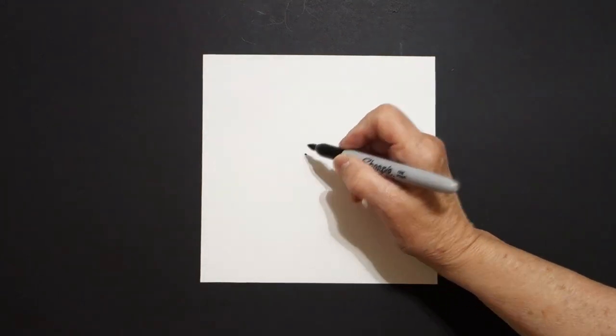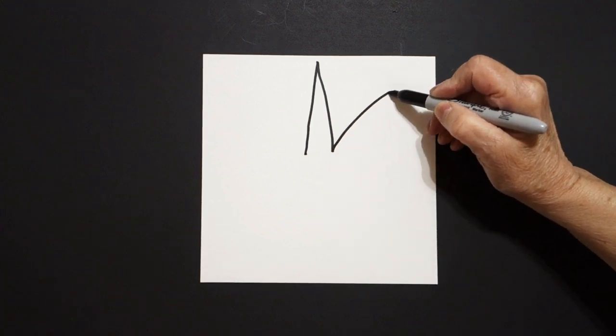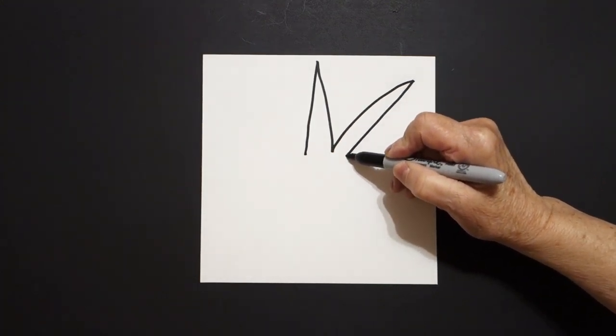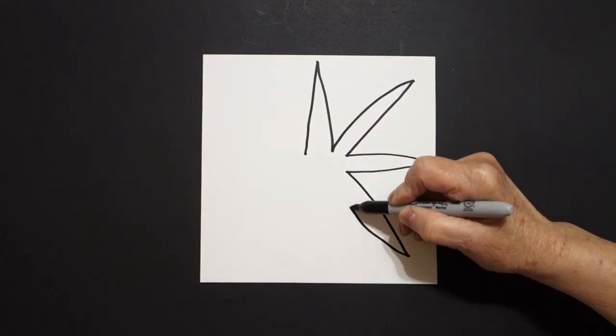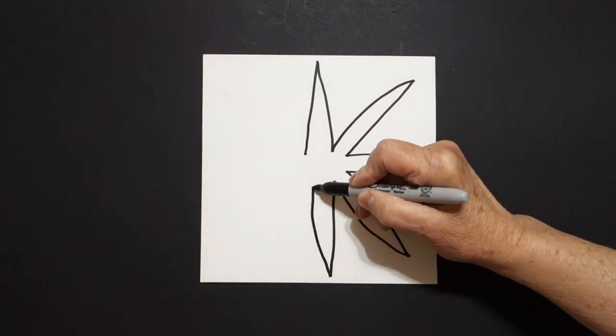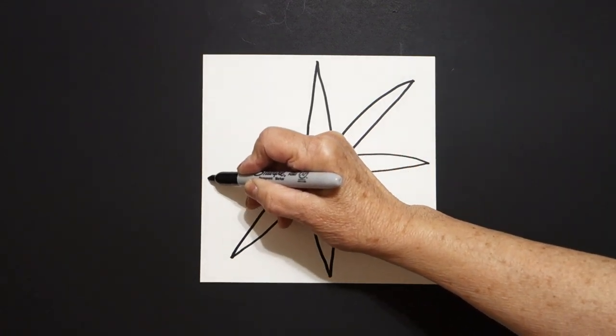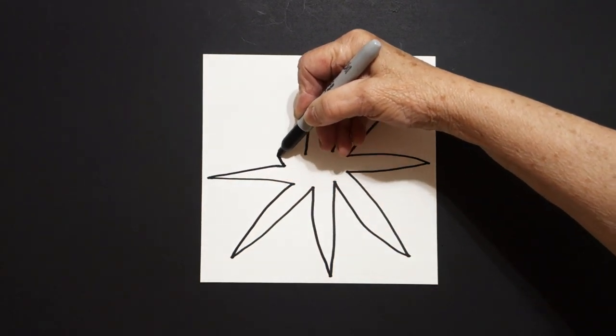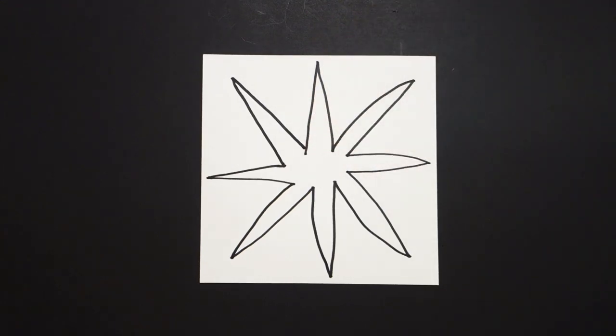I'm going to come right here in the middle of my paper and put a dot. I'm going to go straight line up, straight line down, straight line out, straight line in, straight line out, straight line in, straight line down, straight line up, straight line down, straight line up, straight line out, straight line in, straight line out, straight line in, straight line up, straight line down, and connect. That's all. Let's see how we're going to color this in.